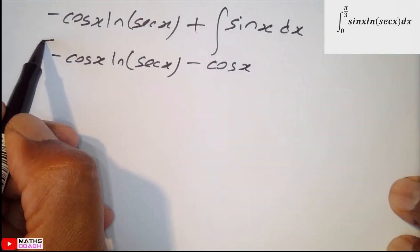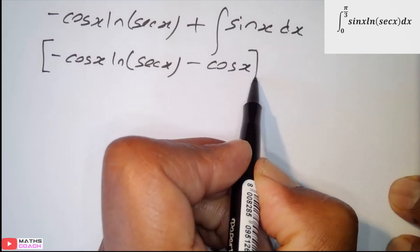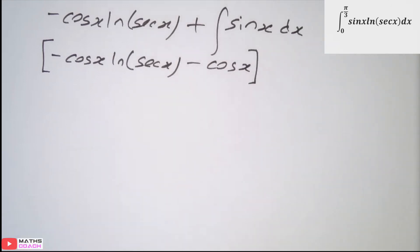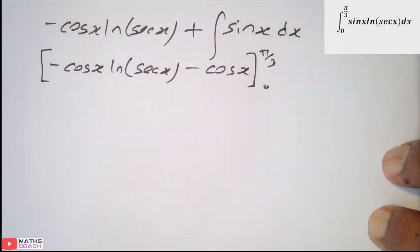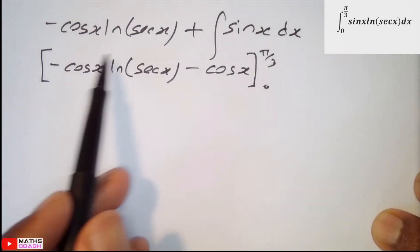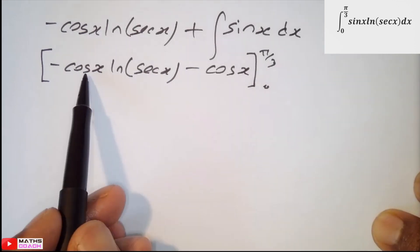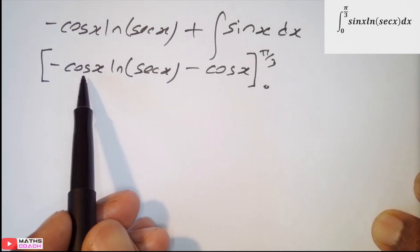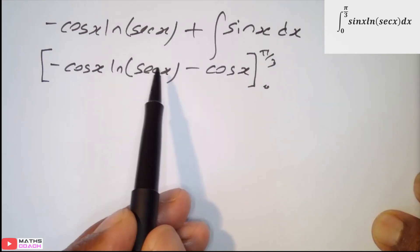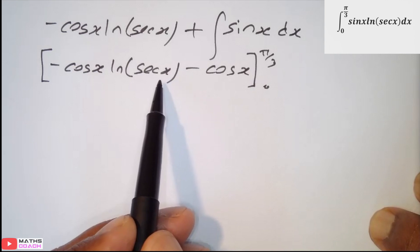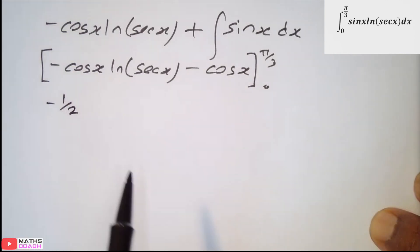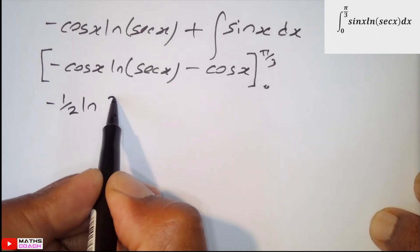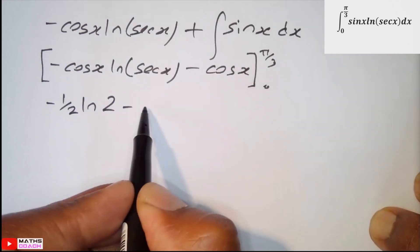Limits being pi over 3 and 0. Let's just focus here for a bit because this is the confusing part of the expression. We know cos of pi over 3 is half. But what's ln sec x? Well, we know sec x is 1 over cos x. So, if cos of pi over 3 is half, then sec x, or sec of pi over 3, must be 1 over half, in other words, 2. So, we end up with negative half ln of 2 minus, back to cos x and back to minus half.